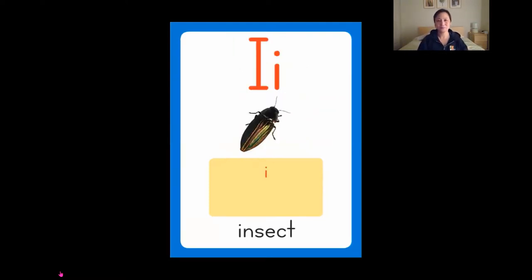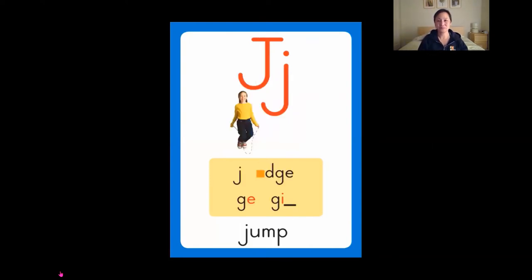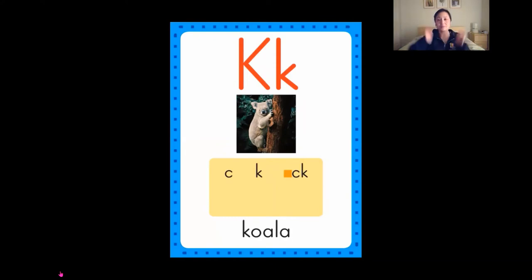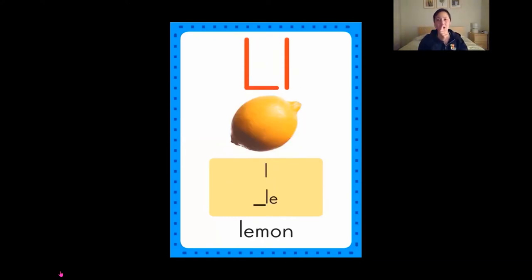I is for insect, insect. J is for jump, jump. K is for koala, koala. L is for lemon, lemon.